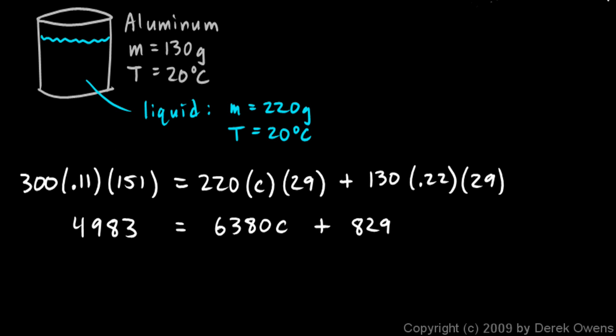Routine algebra at this point. We subtract 829 from each side. We get 4,154 on the left. We still have 6,380 C on the right. So we divide both sides by 6,380. And we end up with 0.65. C is 0.65.